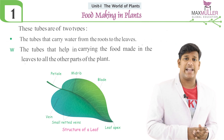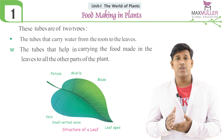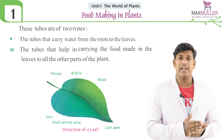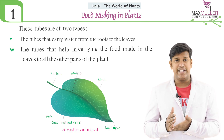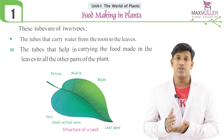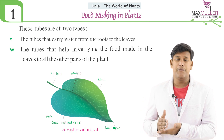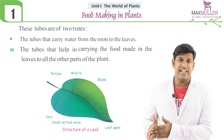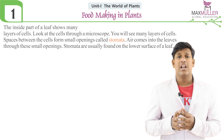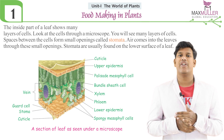The leaf veins are helpful to the plant to transfer food and bring water into the plant. These small tubules are of two different types: one type carries water to the leaf, and the other type carries prepared food from the leaf to all parts of the body.